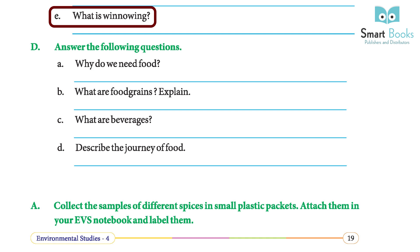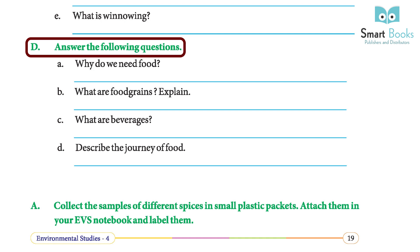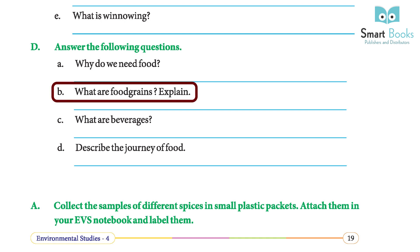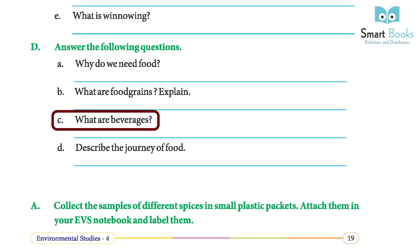What is winnowing? Answer: the process of removing the husk from grains is called winnowing. Why do we need food? Answer: food is one of our basic needs; we require food to have the energy to work and play. What are food grains? Answer: cereals and pulses together are called food grains. What are beverages? Answer: the leaves of some plants are used to make drinks called beverages; tea and coffee are popular beverages obtained from plants.